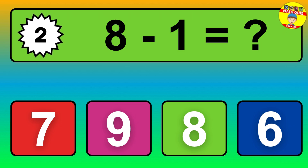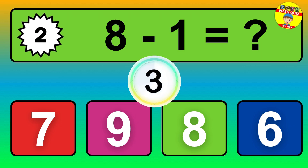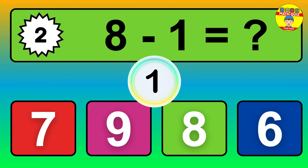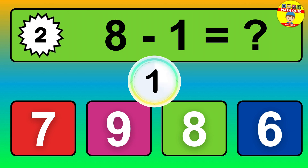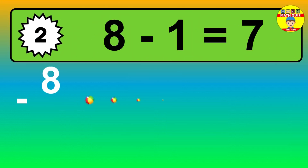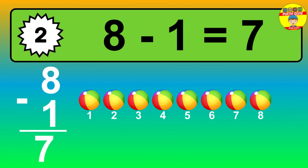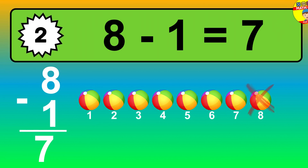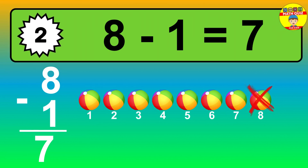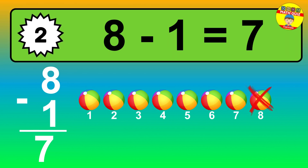Question 2. 8 minus 1 equals what? The answer is 8 minus 1 is 7. Let's count it. 1, 2, 3, 4, 5, 6, 7.